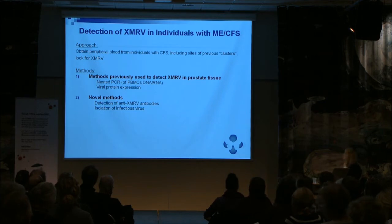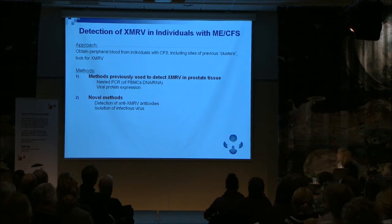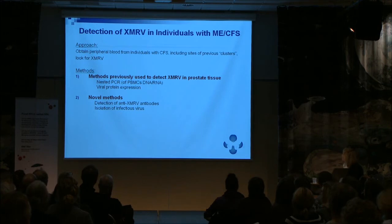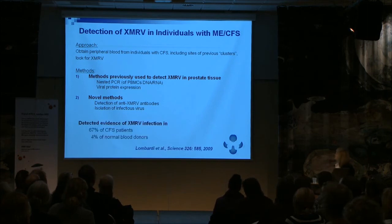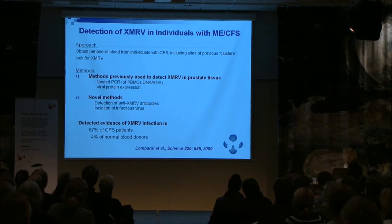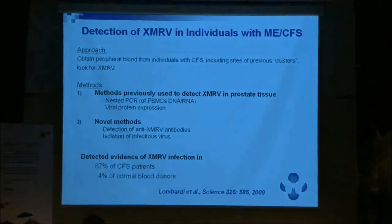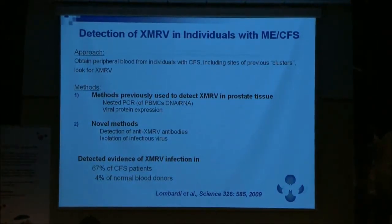We obtained peripheral blood from individuals with CFS, including from sites of previous clusters such as Incline Village. We used the PCR methods Bob Silverman used to detect XMRV in prostate tissue, plus novel methods for detecting anti-XMRV antibodies in the blood and for isolation of infectious virus. When we did that, we detected evidence of XMRV infection in 67% — really a minimum — of the 101 CFS patients in this study. Importantly, we also found evidence of XMRV infection in 4% of normal blood donors, which in the United States would represent 10 million Americans — the highest incidence of any human retrovirus in the United States.